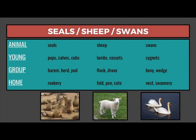The young of seals are pups, calves, or cubs. A group of seals is a harem, herd, or pod. The home of seals is a rookery.